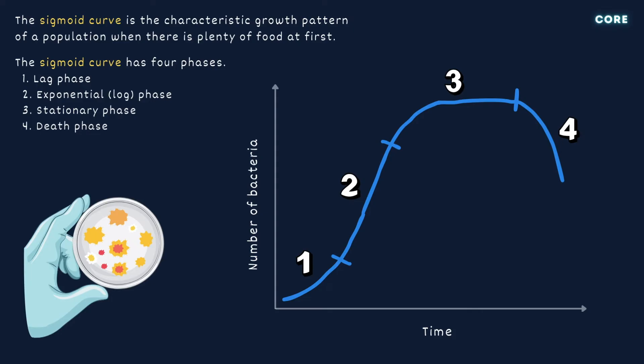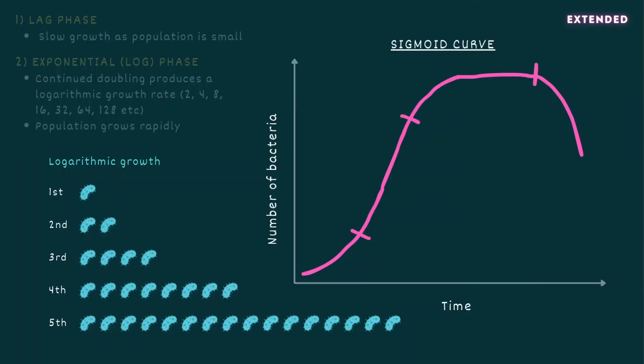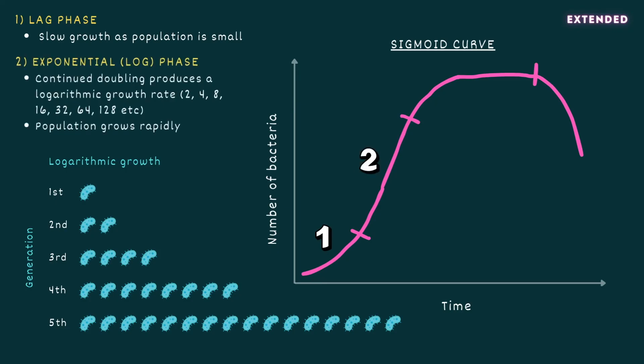For extended, you also need to explain the factors that lead to each of the four phases. Using the example of a population of bacteria that doubles in number with each generation: in the lag phase, the population is small, meaning each doubling results in a relatively small increase in number. However, continued doubling produces a logarithmic growth rate, meaning that as the population expands and enters the exponential phase, each doubling results in a far greater increase in number.